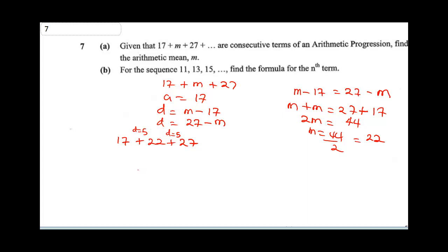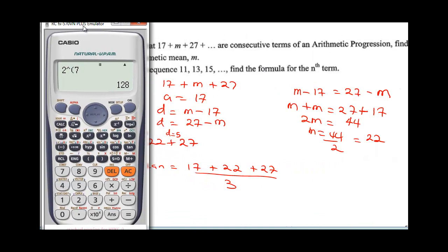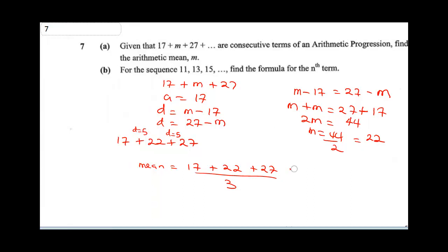It says find the arithmetic mean. Mean is going to be 17 plus 22 plus 27 divided by 3. We're going to punch this on our calculator. This is going to be 17 plus 22 plus 27. This will give me 66 over 3. This is still going to give me 22. So the mean is 22.